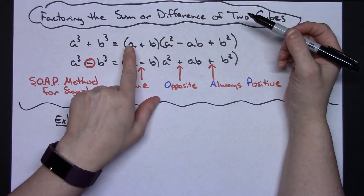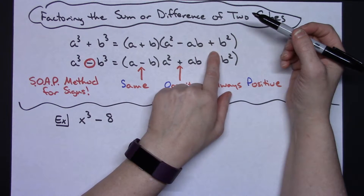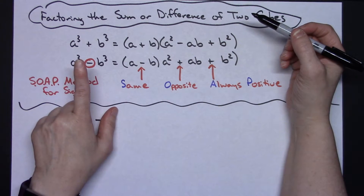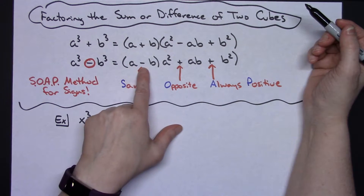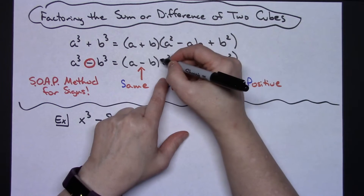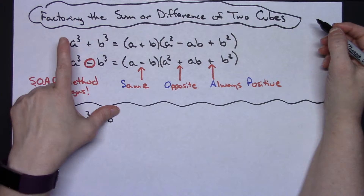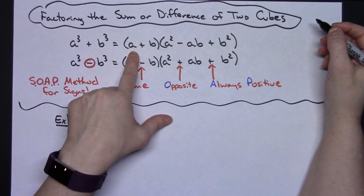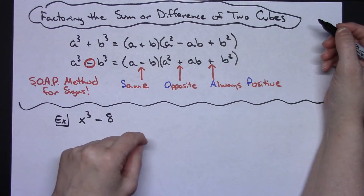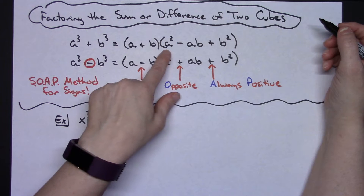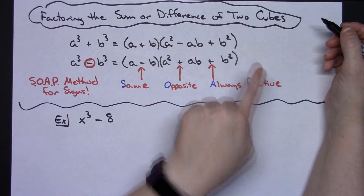They factor into a plus b times the quantity a squared minus ab plus b squared. When it's a difference of two cubes, it factors into a minus b times the quantity a squared plus ab plus b squared. If I've got an a cubed, this a is the cube root of a to the third — that's the correlation in the formula. You take the cube root and square it, you take the cube root of both terms and multiply, then take the cube root and square it.